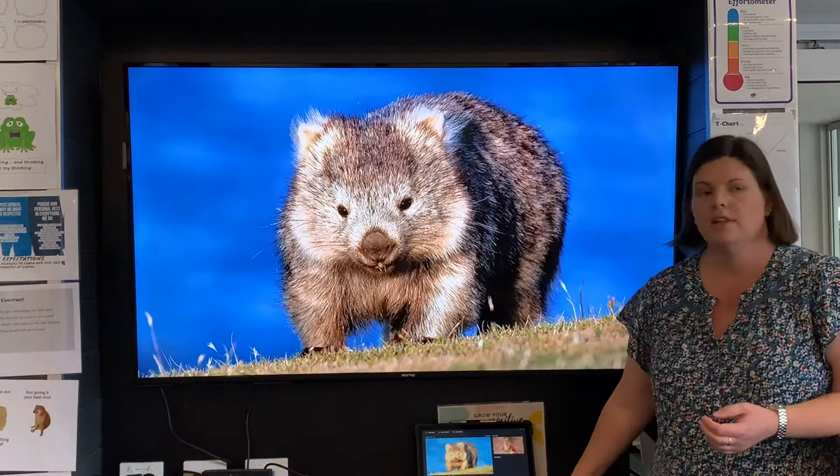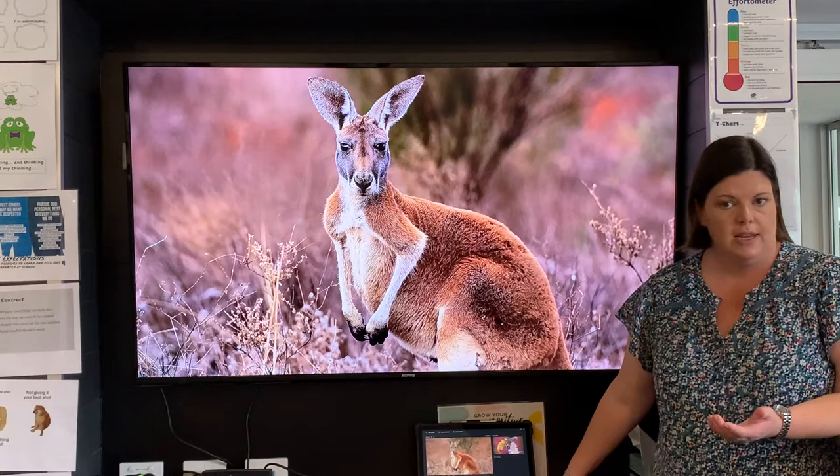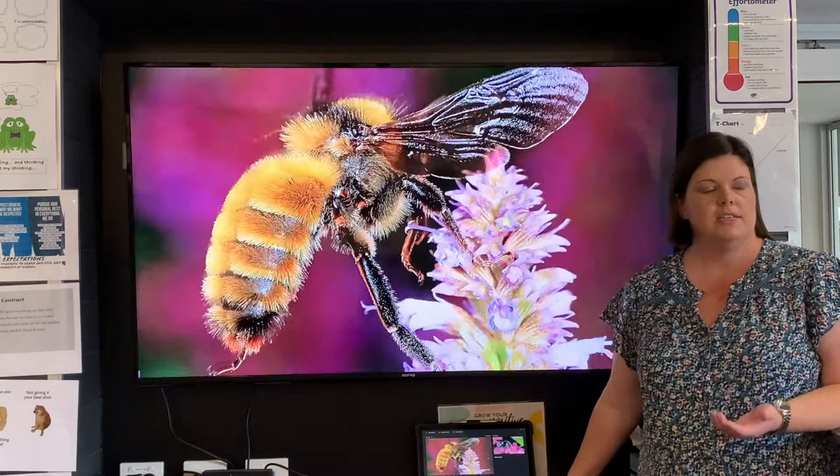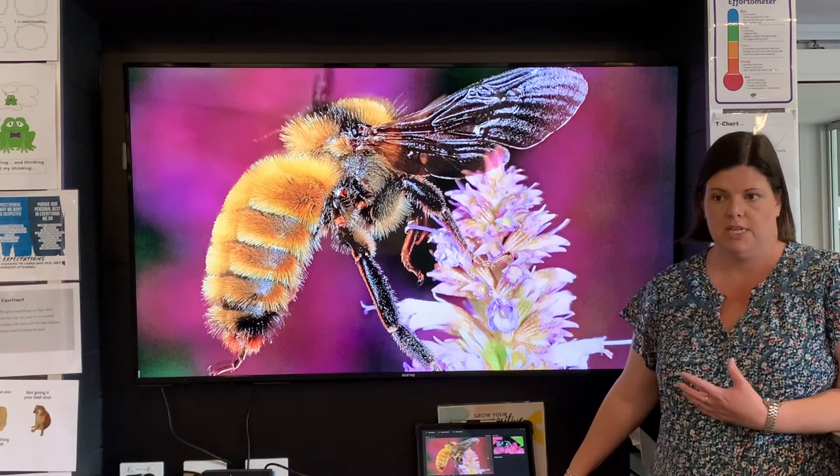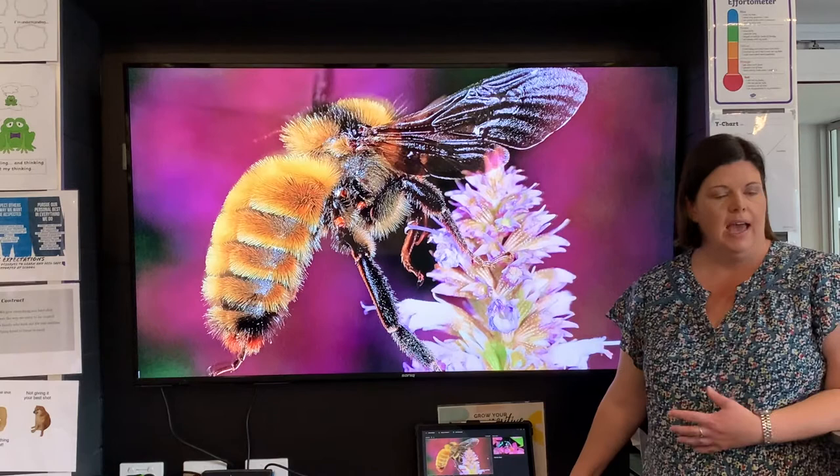Koalas are only found in Australia. Wombats are only found in Australia. Kangaroos are only found in Australia — so they're endemic to our country. And why this is really cool for your project is there's a whole heap of bee species that are only found in Australia, particularly native bees.